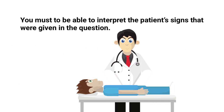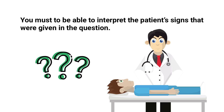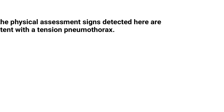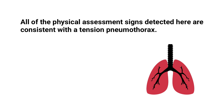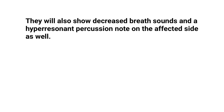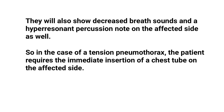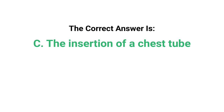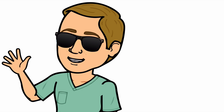To get this correct, you have to interpret the patient signs given in the question. All of the physical assessment findings here are consistent with a tension pneumothorax. Patients with a pneumothorax will typically show tracheal deviation away from the affected side, as well as decreased breath sounds and a hyper-resonant percussion note on the affected side. In the case of a tension pneumothorax, the patient requires immediate insertion of a chest tube on the affected side.